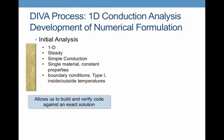What this allowed us to do was to build a first approximation. We built a code, and we could verify it against an exact solution. This is why this first approximation was so valuable — we know that the code gives us the correct answer because we can compare it to something that we can do analytically by hand.